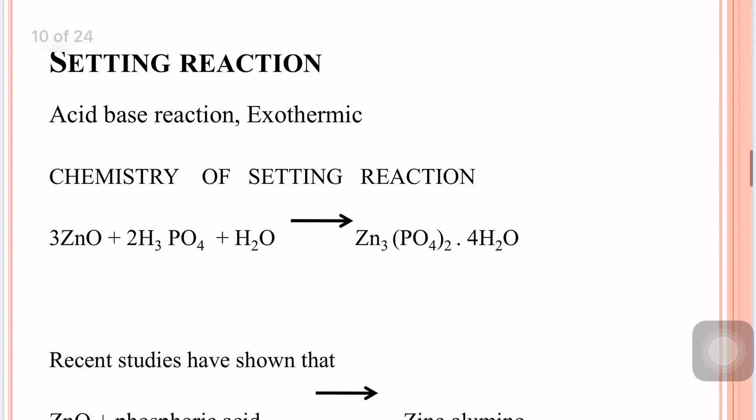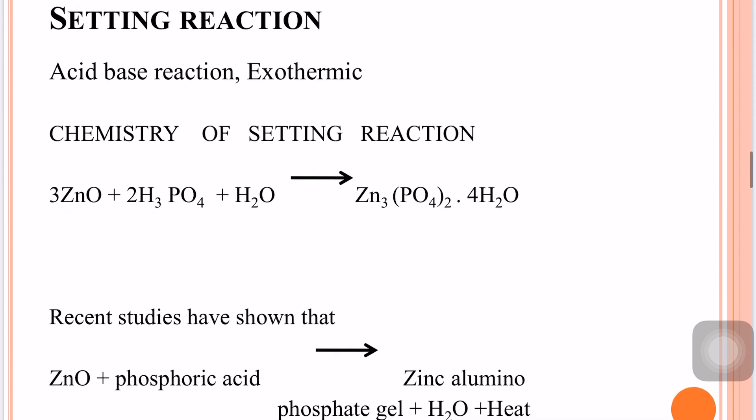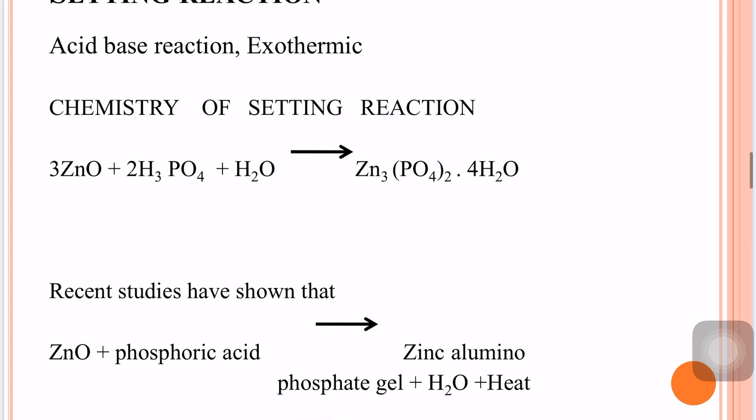The setting reaction is mainly an acid-base reaction, and heat is liberated during the setting reaction; hence it is known as an exothermic reaction. When the liquid — phosphoric acid — is mixed with zinc oxide powder, the phosphoric acid attacks the zinc oxide powder, leading to the formation of zinc aluminium phosphate gel, with water and heat also liberated.